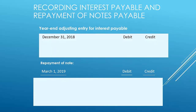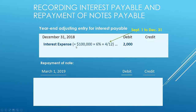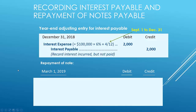The note was taken out on September 1st, so on December 31st Southwest Airlines knows they've incurred some interest even if they haven't paid Bank of America yet. To calculate accrued interest: $100,000 times 6% times 4/12 of the year — September, October, November, December — equals $2,000 of interest expense. They haven't actually paid it, but they've incurred it, so it goes into a payable account.